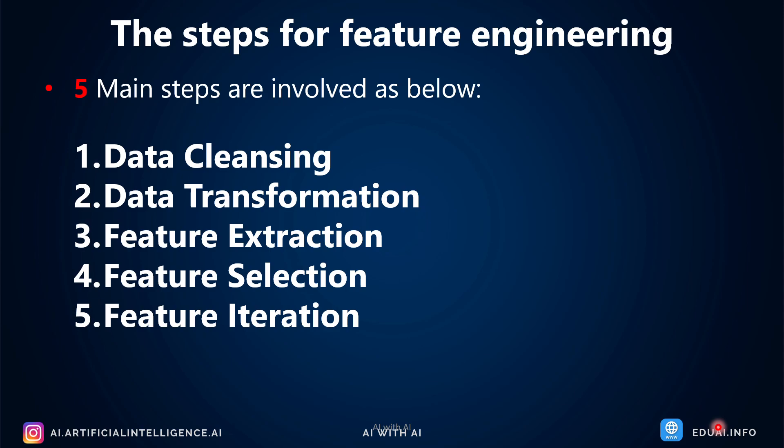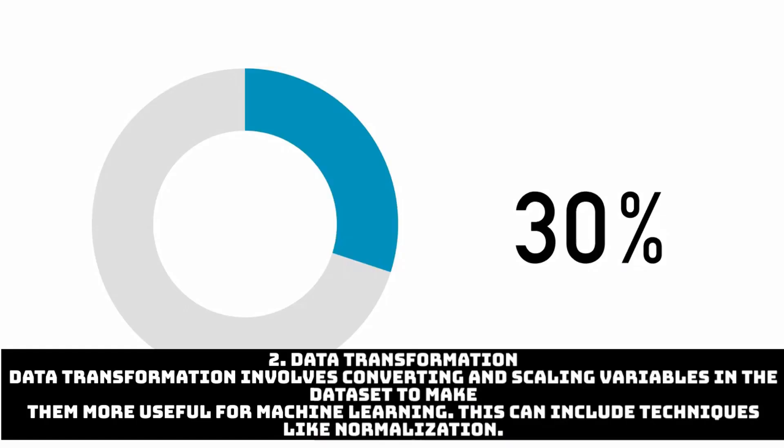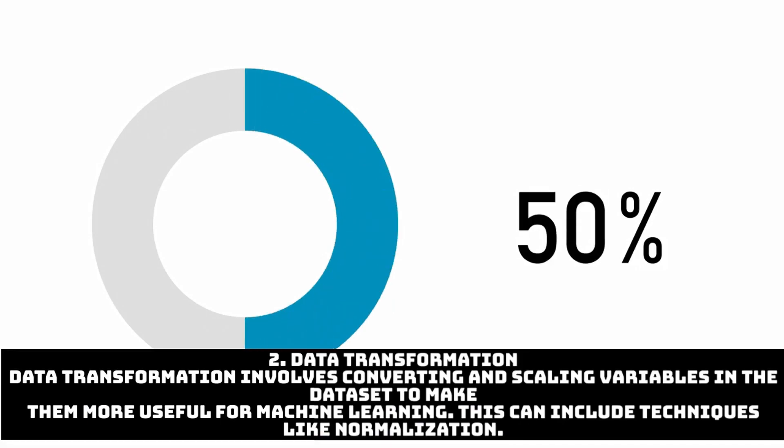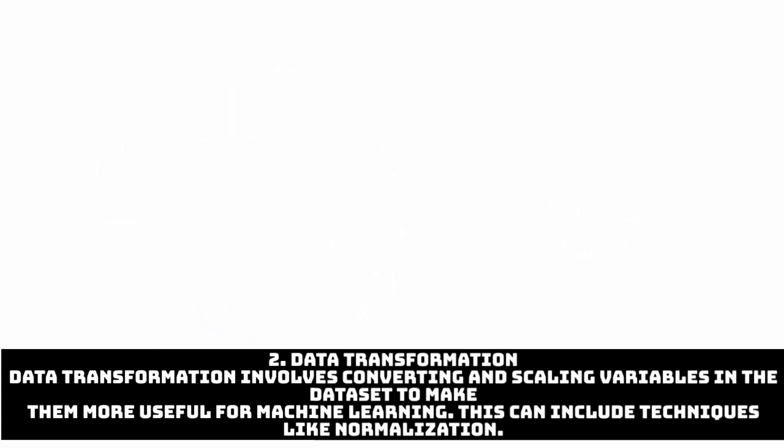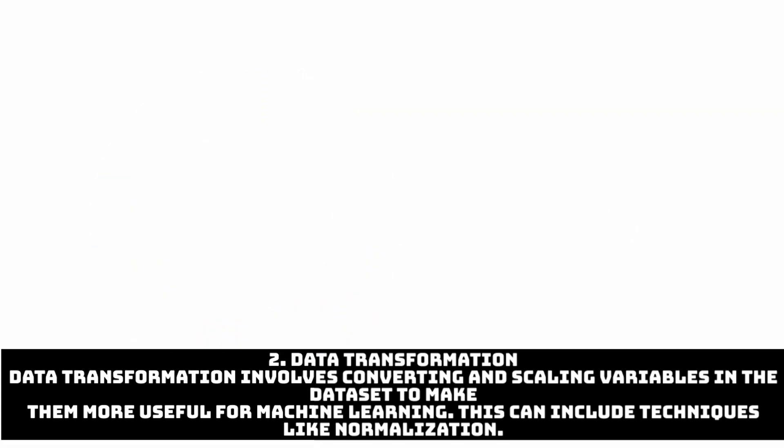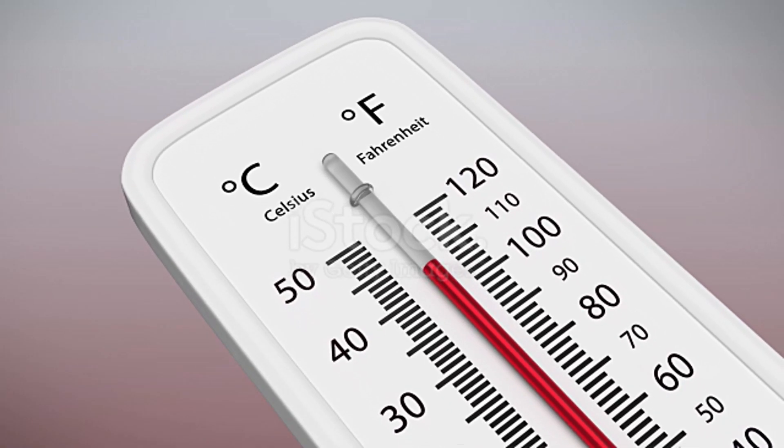The second is data transformation. Data transformation is really important. It involves converting and scaling variables in the dataset to make them more useful for machine learning. This includes techniques like normalization, standardization, and even log transformation. Just to give you a simple example: machine learning doesn't understand categorical data, right?